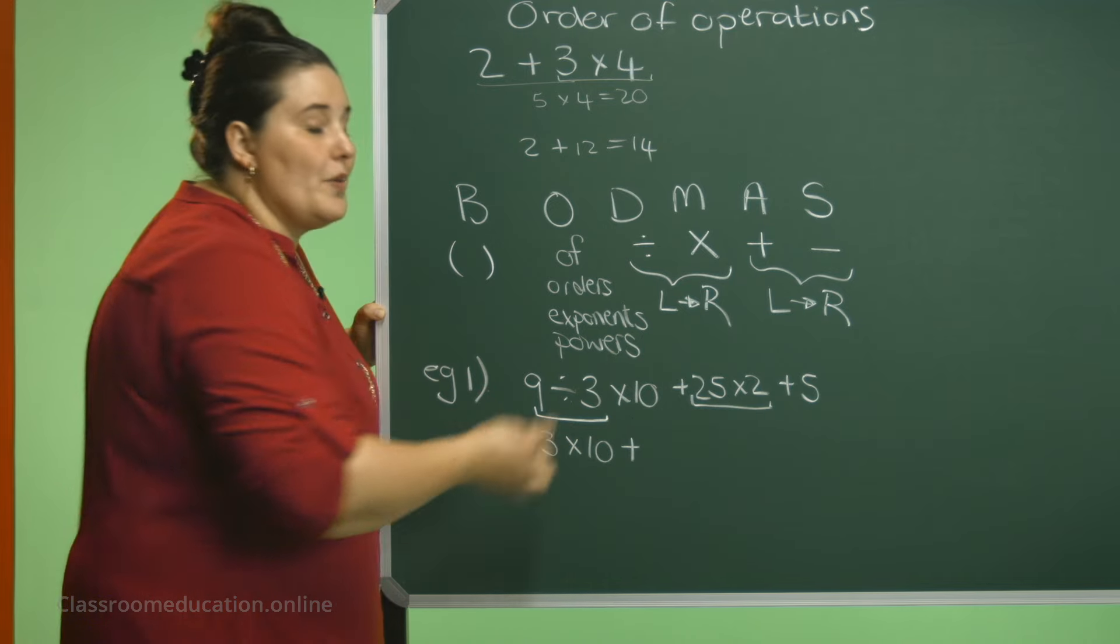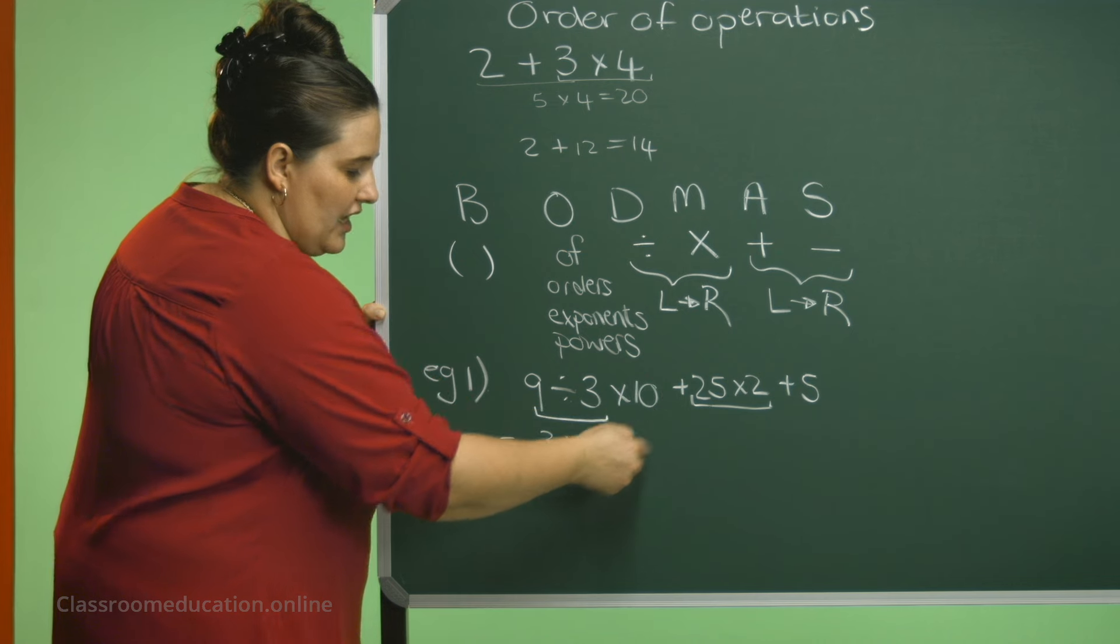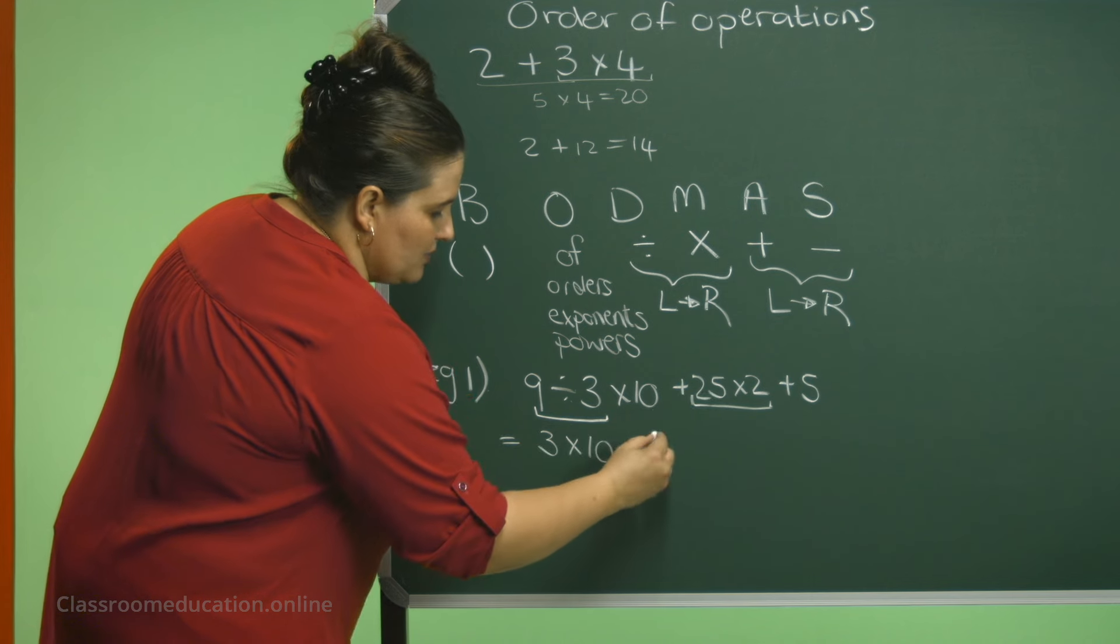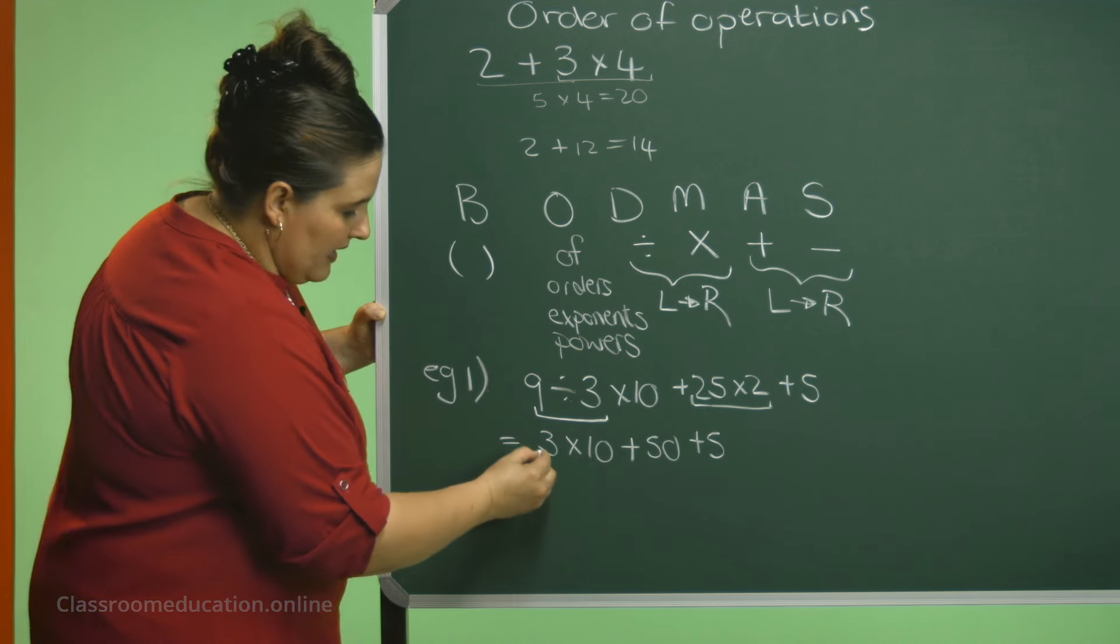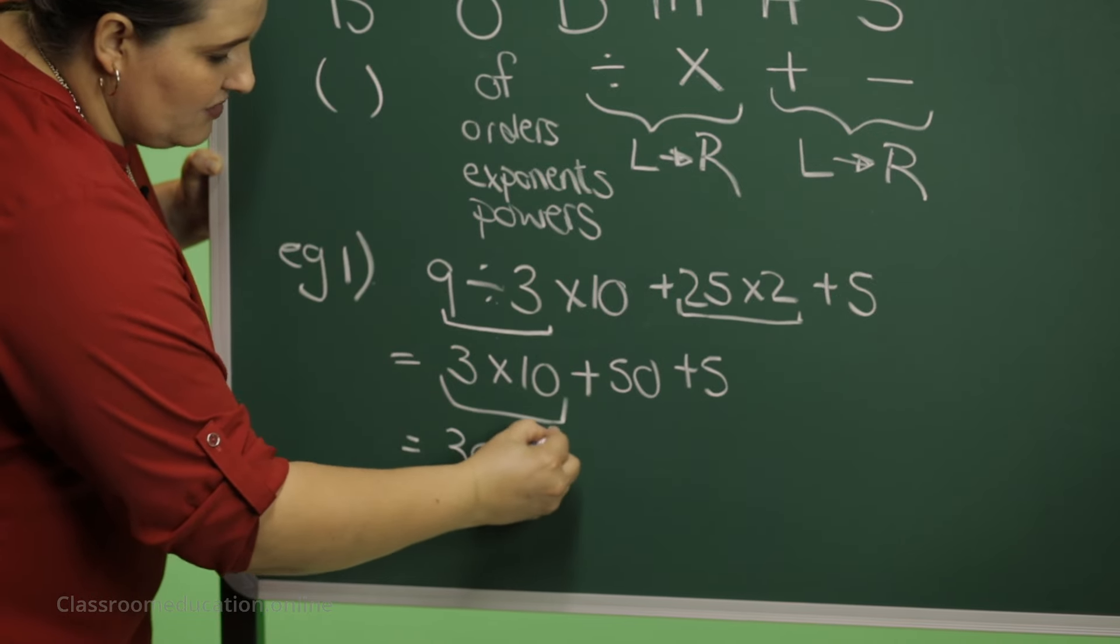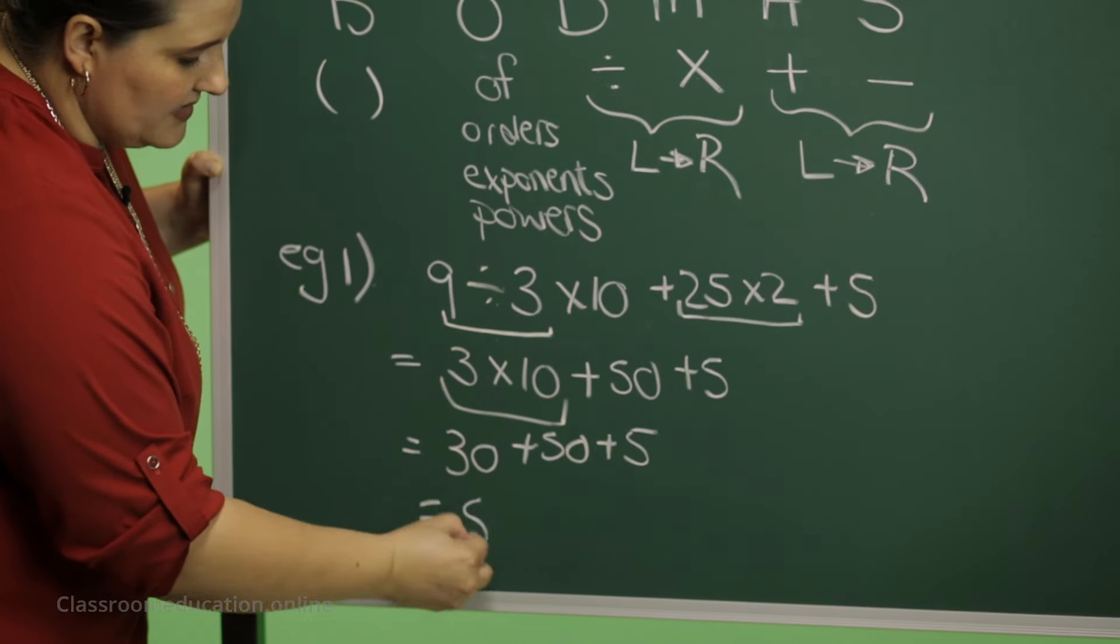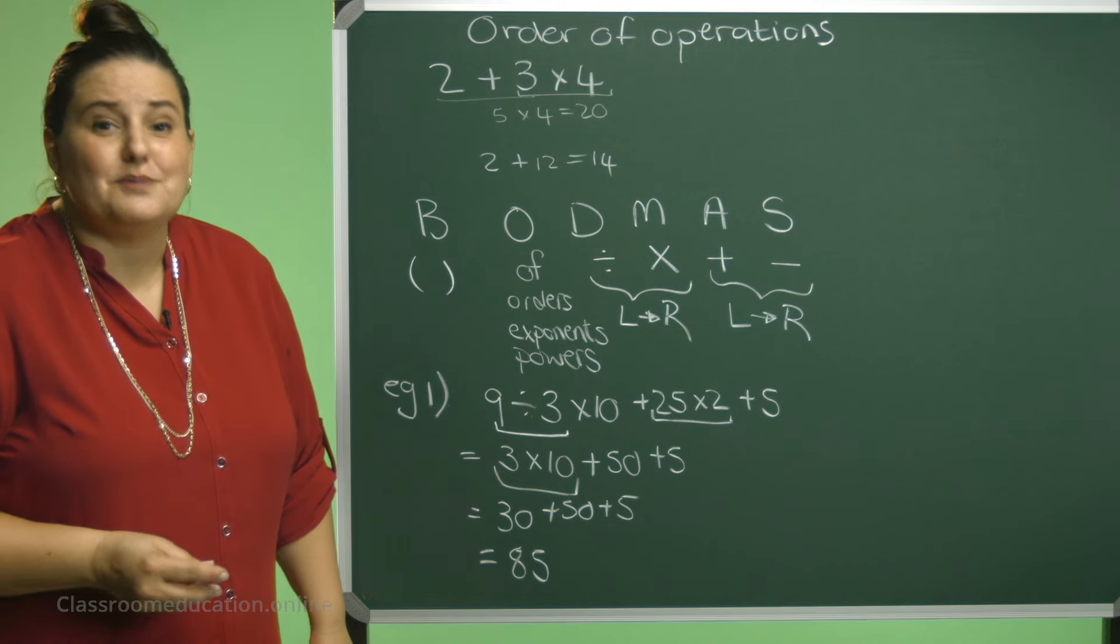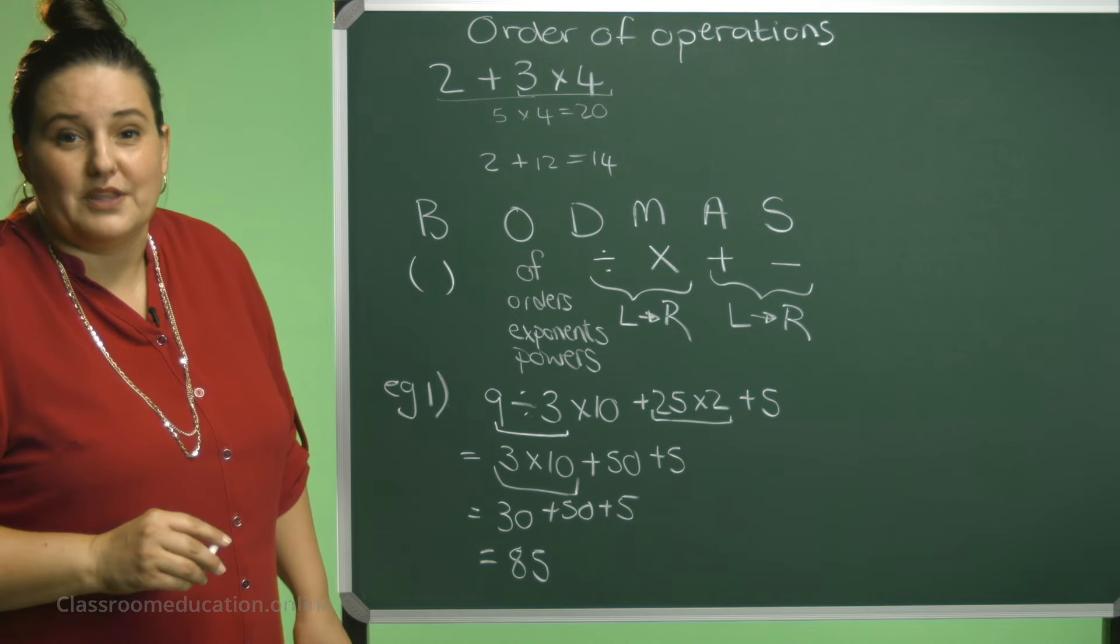And then I still need to multiply that by 10. Plus, now I can do the 25 times 2. I cannot add the 25 with this first. I need to do the multiplication first. So 25 times 2 is 50 plus 5. Here, 3 times 10 is 30 plus 50 plus 5 will give me an answer of 85. Do you understand it? Does it make sense to you?